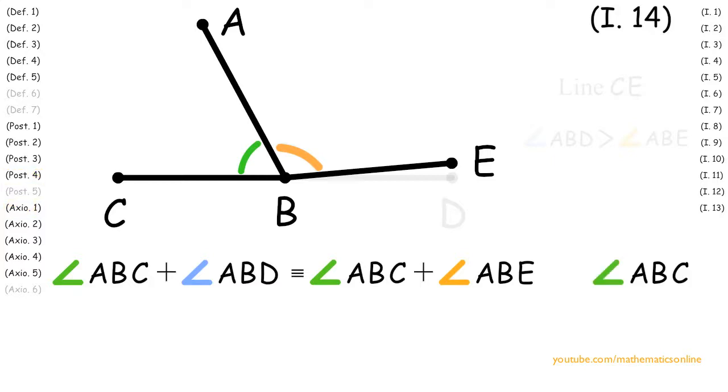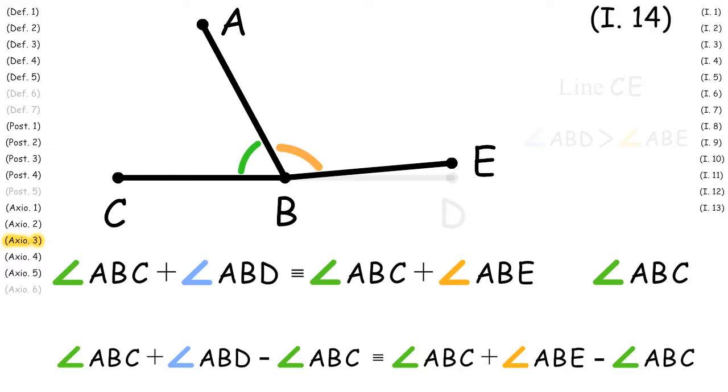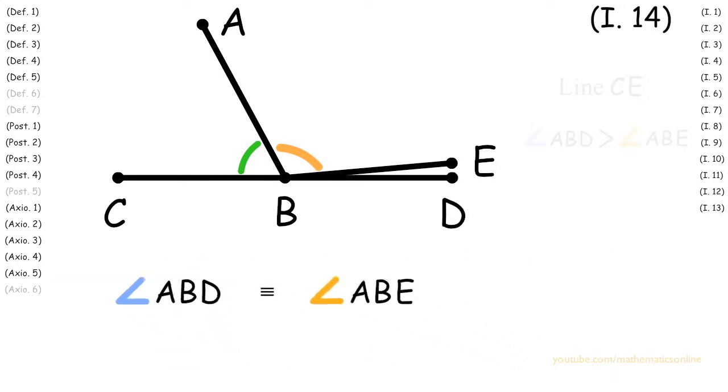Next, with angle ABC, we apply Axiom 3 to show that angle ABC plus angle ABD minus angle ABC is congruent to angle ABC plus angle ABE minus angle ABC. And what this turns out to be is angle ABD is congruent to angle ABE.